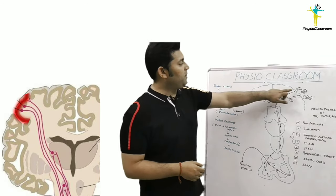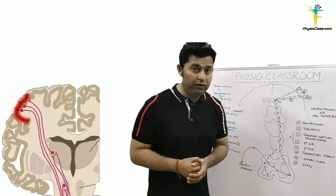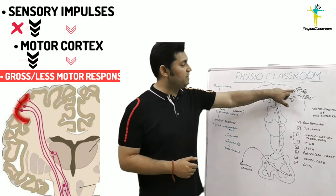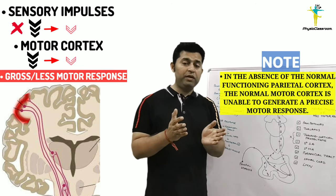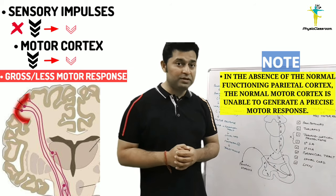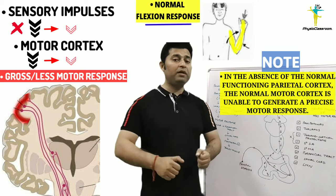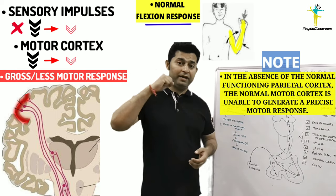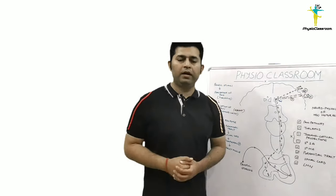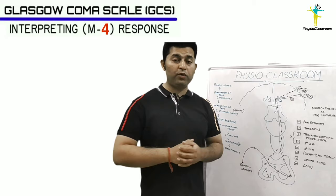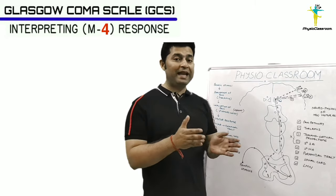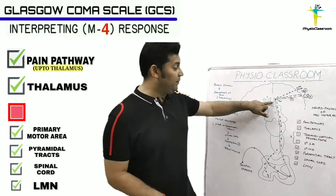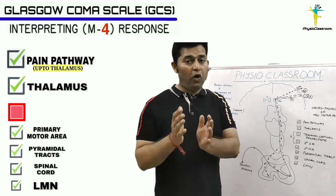In such a case, the motor signals generated from the primary motor area will be deprived of meaningful sensory feedback. As a result, the primary motor cortex generates motor impulses that are more gross in their function. What we observe is a normal flexion response to pain, with the patient remaining unaware of where to take the hand to remove the painful stimuli. In head injury patients demonstrating M4 motor response, we can conclude that the pain pathway is intact up to the level of the thalamus.